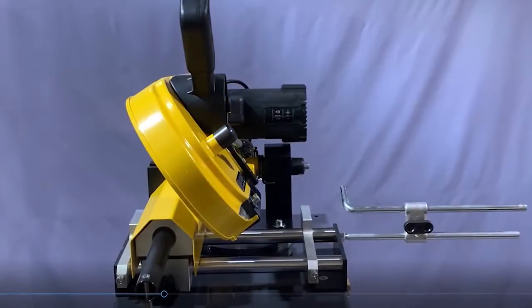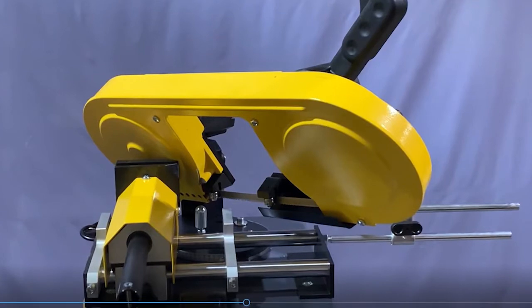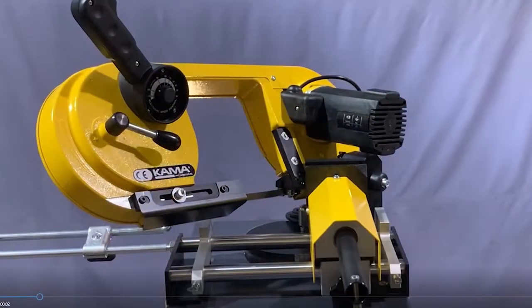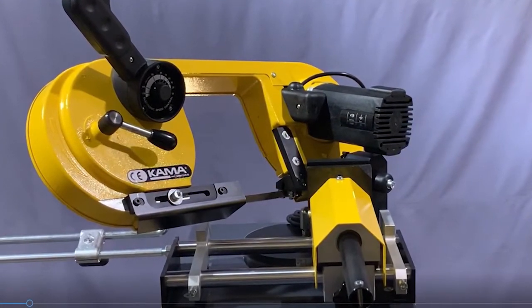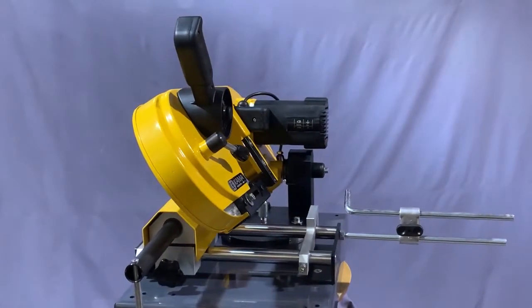The EV-90DM changes angles from center to right to left in seconds. When comparing our benchtop bandsaws with others on the market, be sure and take notice of the weight of the machines.